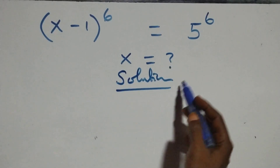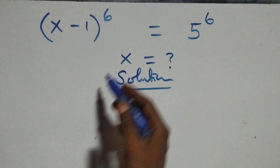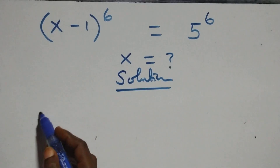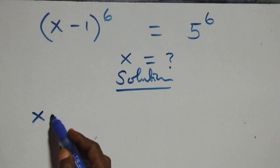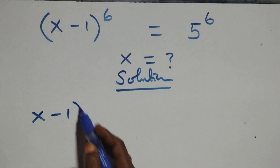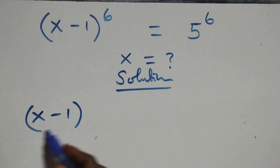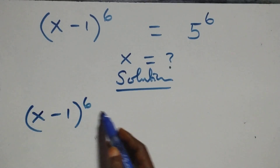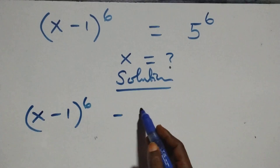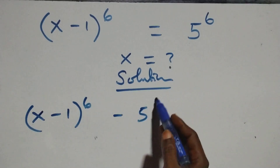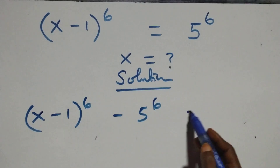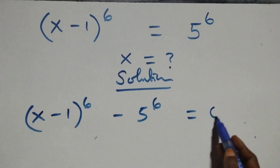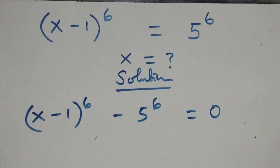From here we take 5 raised to power 6 to the left hand side. And what we have becomes (x minus 1) raised to power 6, minus 5 raised to power 6, then equals to 0.